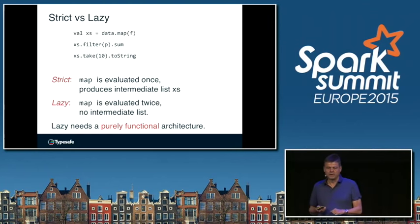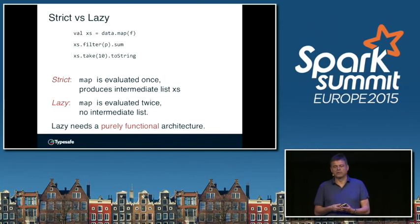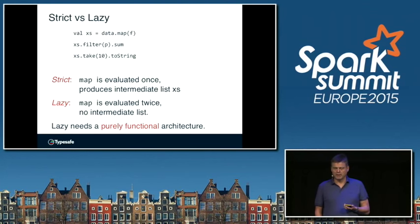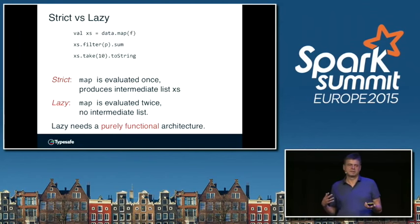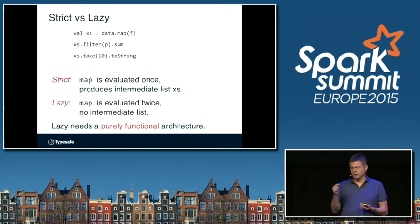The difference between lazy and strict is best seen in a small example. Say you have data.map(f) stored in a value xs, then you filter the result, take the sum, and separately take the first elements and print them. In a strict collection library, the map would be evaluated once and stored in xs. In a lazy collection library, the map gives you a recipe for how to compute the result — it doesn't actually compute it. So xs contains that recipe, and map would be evaluated twice: once when followed by filter, and once when followed by take.